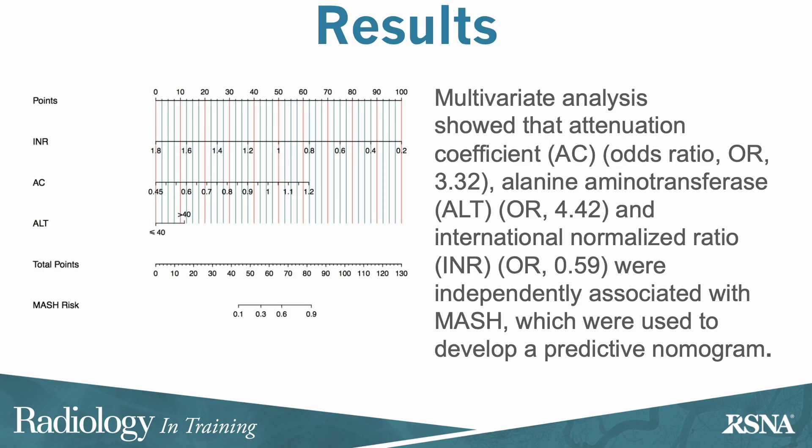Multivariate analysis showed that attenuation coefficient, alanine aminotransferase, and international normalized ratio were independently associated with steatohepatitis, which was then used to develop a predictive nomogram.